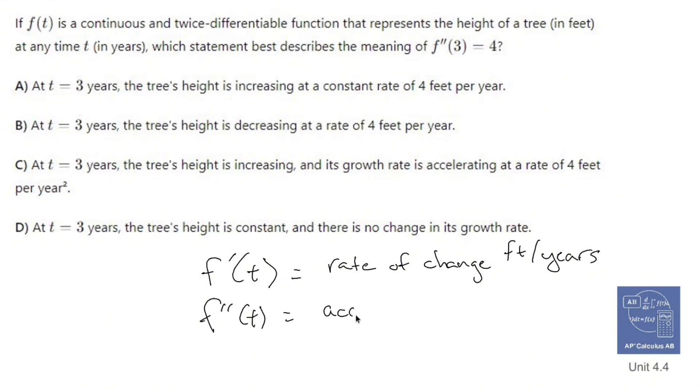Now that is the acceleration. And that's measured in feet per year squared. So that's how your rate of change is increasing or decreasing. All right. So what this means is that if I were to plug in 3 to get 4, f double prime of 3 to get 4 means that I am growing at 4 feet per year squared.